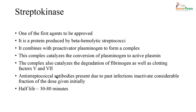Streptokinase is one of the older first agents approved by regulators. It is a protein produced by beta-hemolytic streptococci. This beta-hemolytic streptococci combines with a pro-activator, plasminogen, to form a complex. Once this complex is catalyzed, it converts plasminogen to active plasmin, which causes degradation of fibrinogen as well as clotting factors 5 and 7.